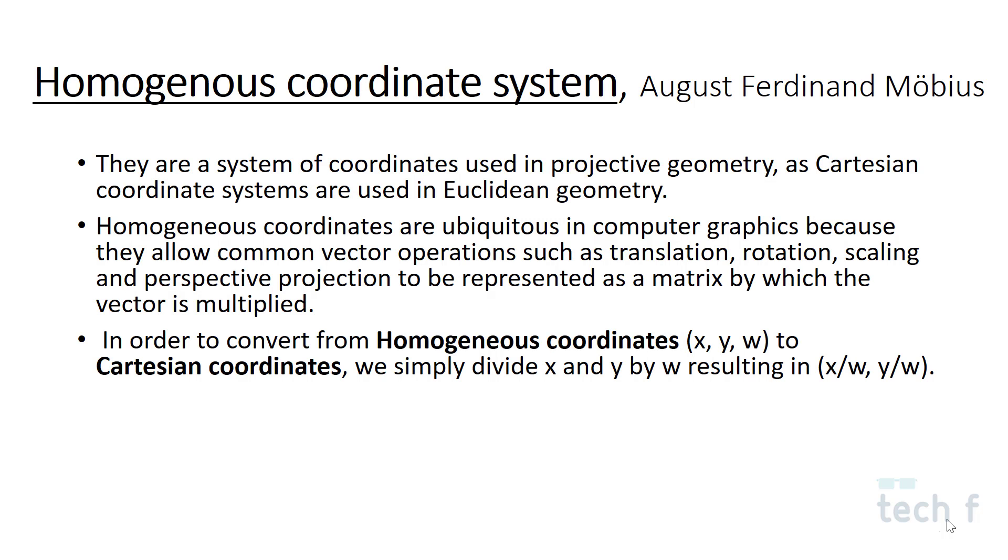The homogeneous coordinate system was introduced by August Ferdinand Möbius. Just like Euclidean geometry has Cartesian coordinate systems, projective geometry has homogeneous coordinate systems. They are mostly used in computer graphics and allow common vector operations such as translation, rotation, scaling, and perspective projection.